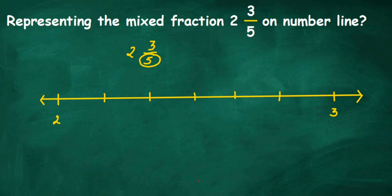I'm going to erase this — we had 6 equal parts by mistake. Let me erase and write 3 here. Now let's count again: there should be 5 equal parts. Don't count the lines — count the spaces: 1, 2, 3, 4, and 5. Yes, 5 equal parts are there.